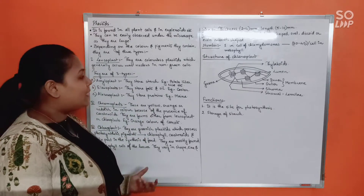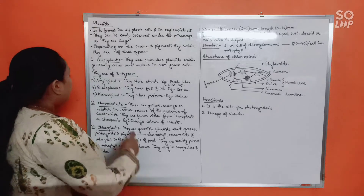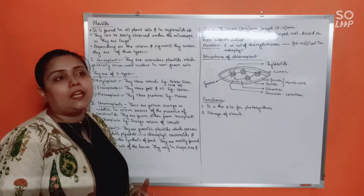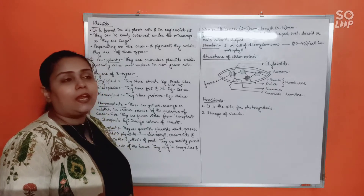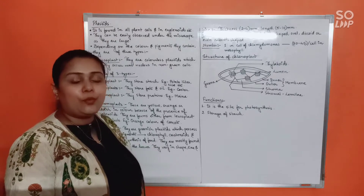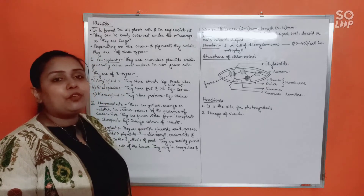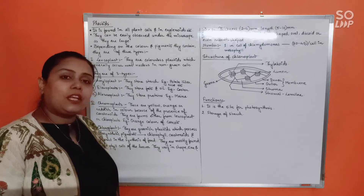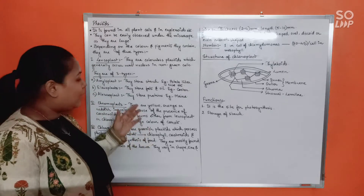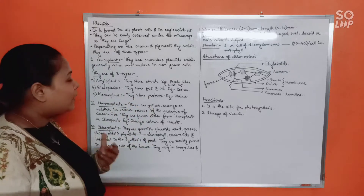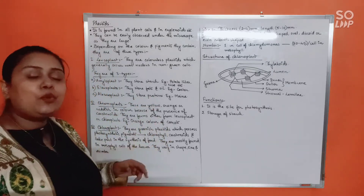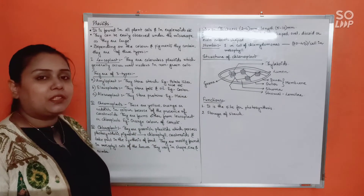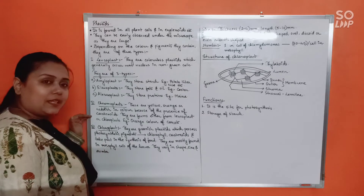Then there are aleuroplasts. You have learned about the aleurone layer in the maize grain structure from the morphology chapter - that layer remains along with the endosperm and is proteinaceous. So aleuroplasts store proteins, and the example is the aleurone layer of the maize grain.